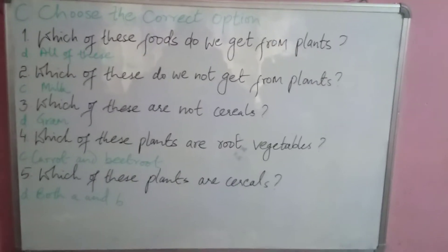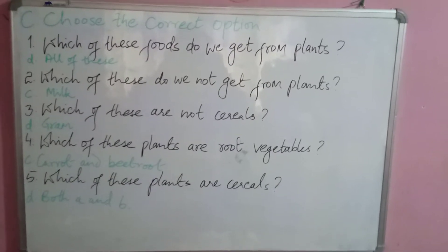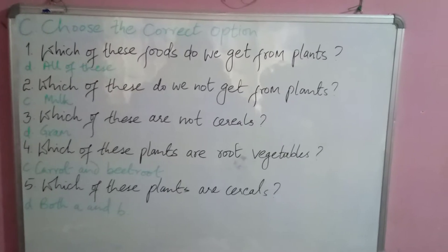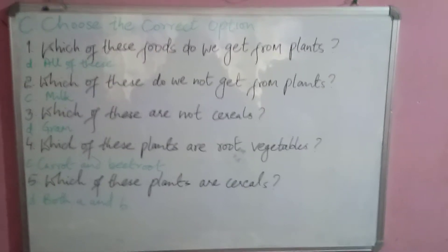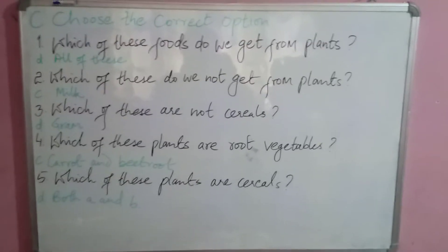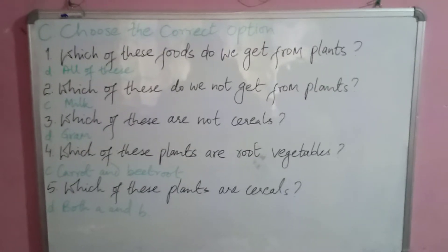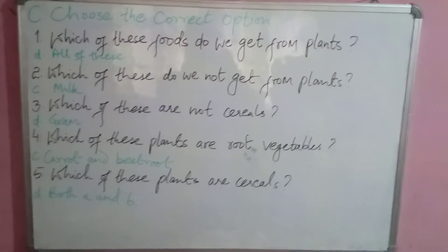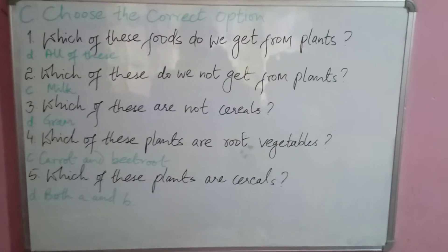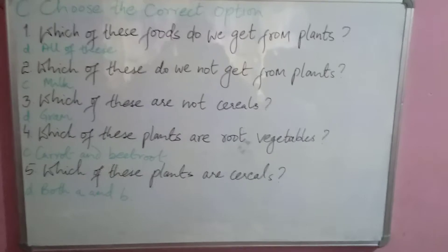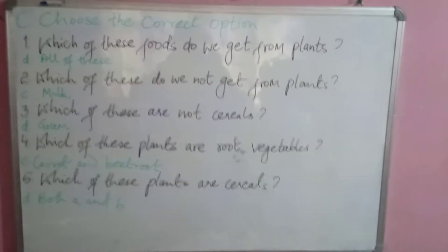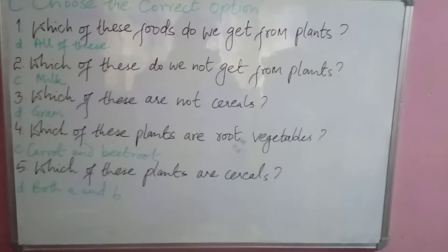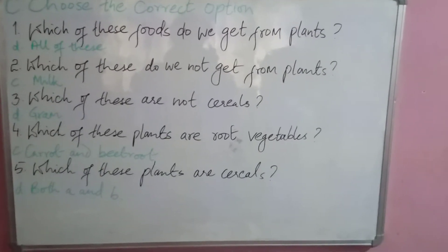Question number two: which of these do we not get from plants? The options are tea and coffee, oil and sugar, milk and coffee, and spices. We have to write only milk, because we get coffee from plants — milk is what we do not get from plants. Choose option C.